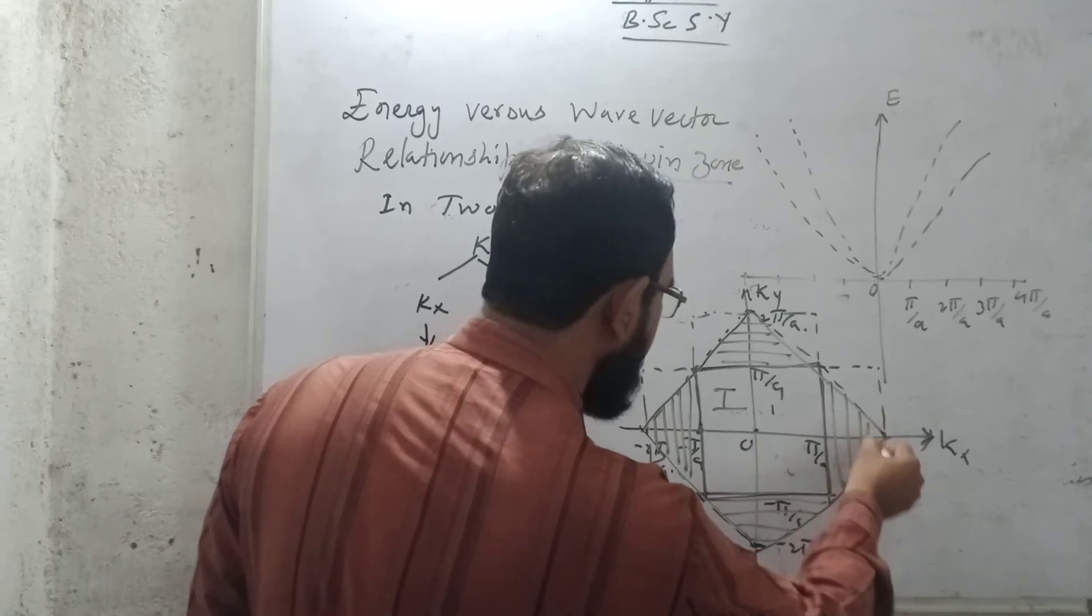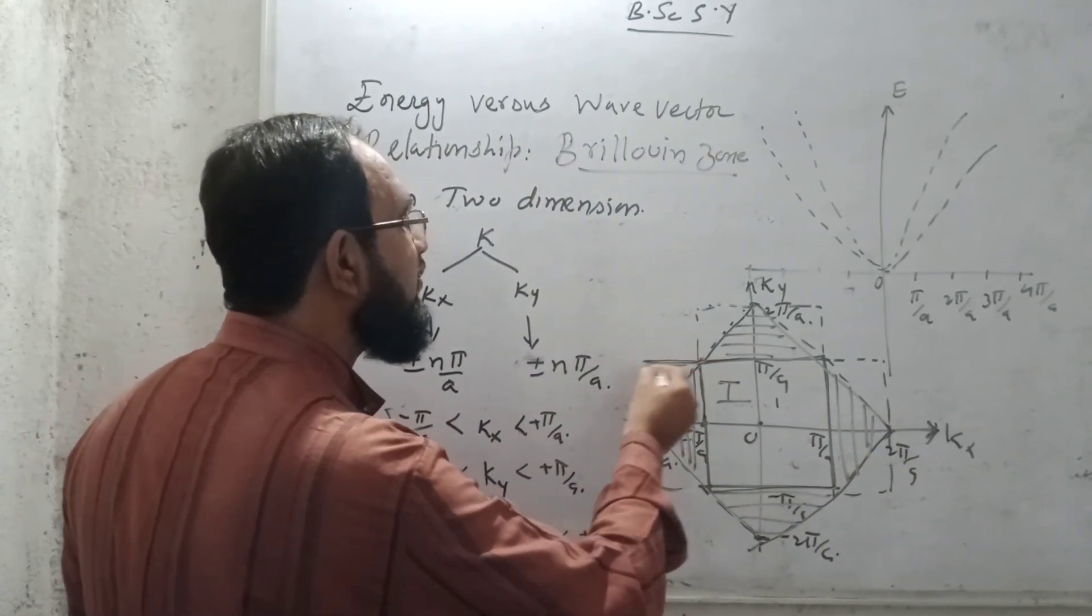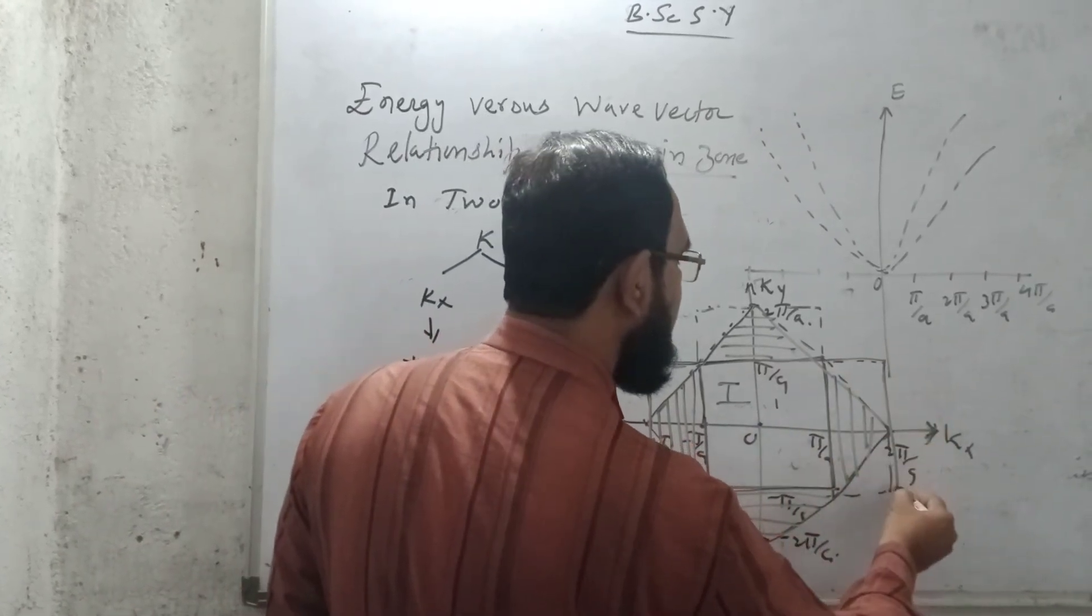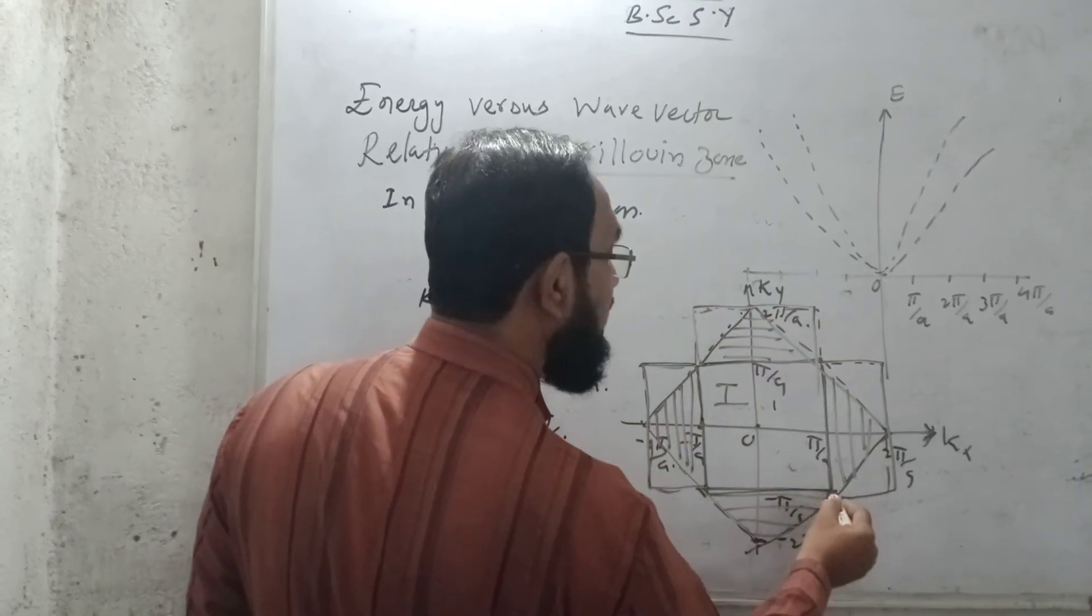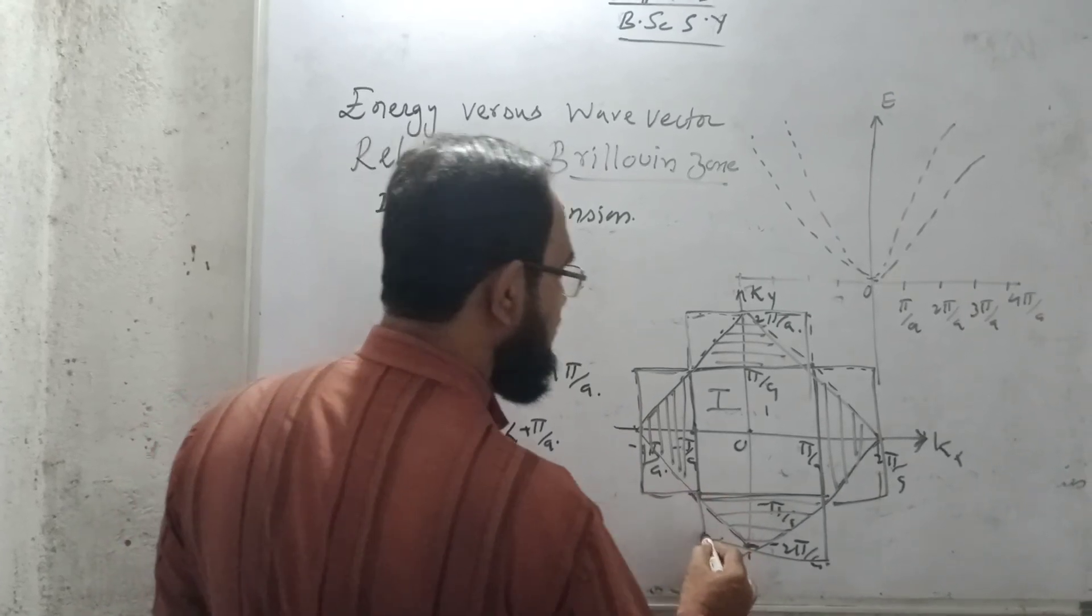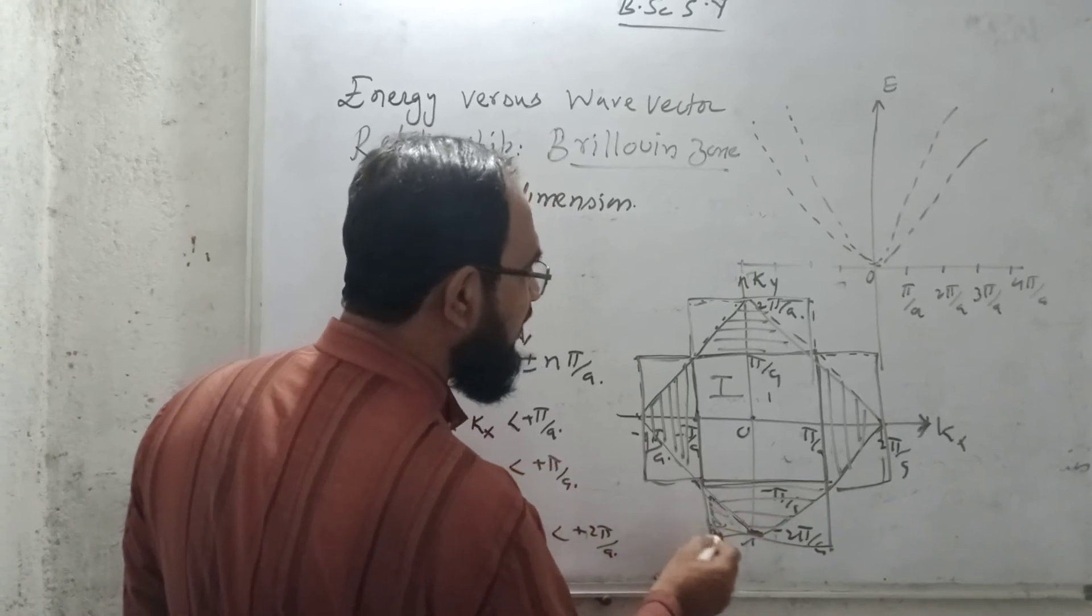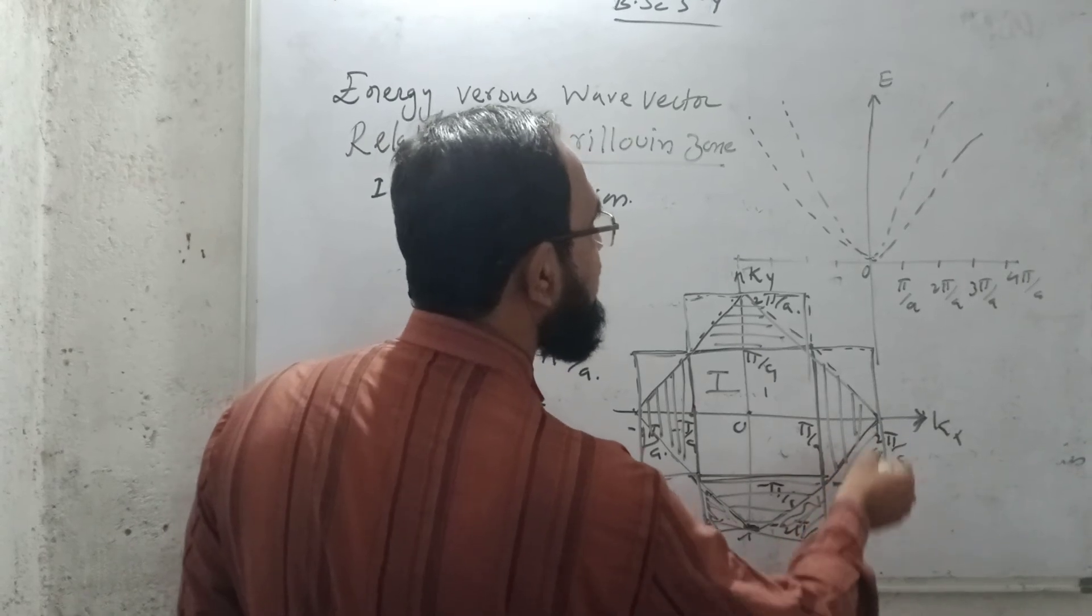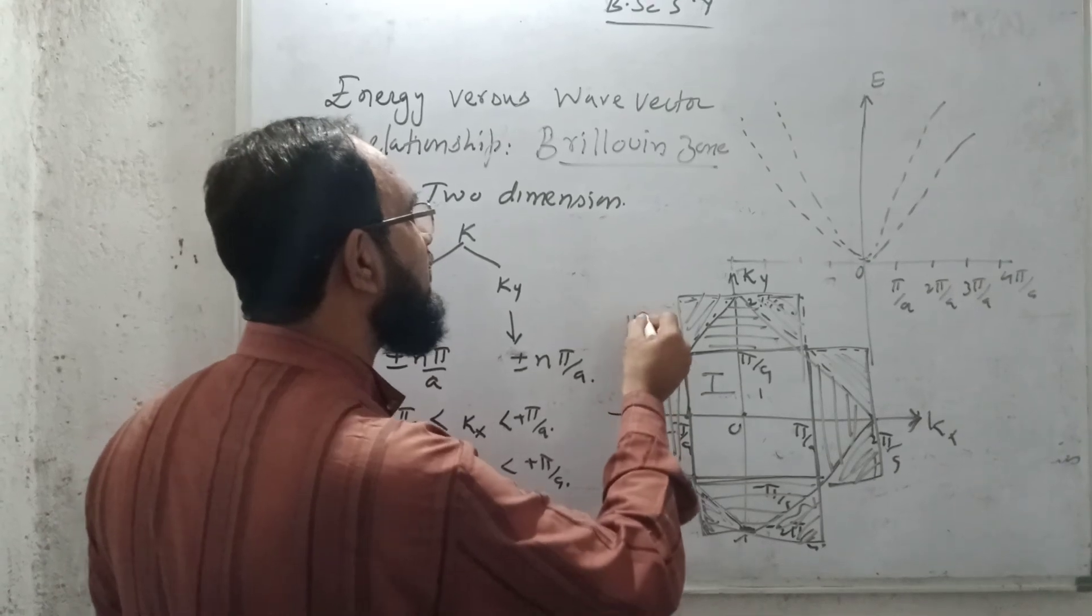And for the third Brillouin zone, I will take this value from minus 2π/A to plus 2π/A, on this side also, on this side also, and on this side also. So these lines, I will make it shaded part, so this line will be the third Brillouin zone.